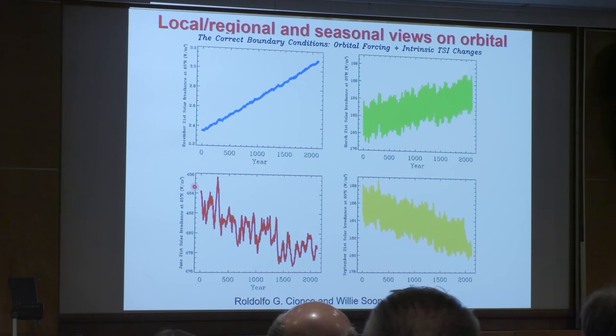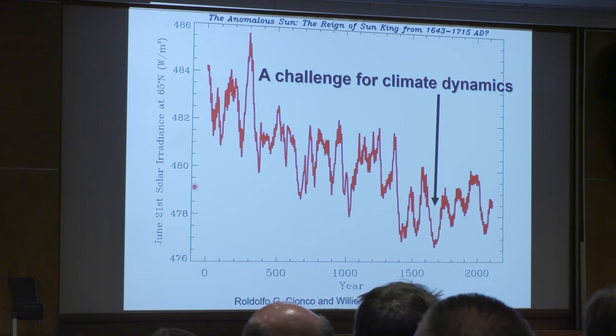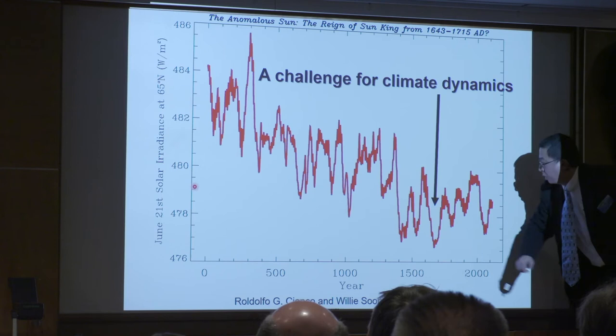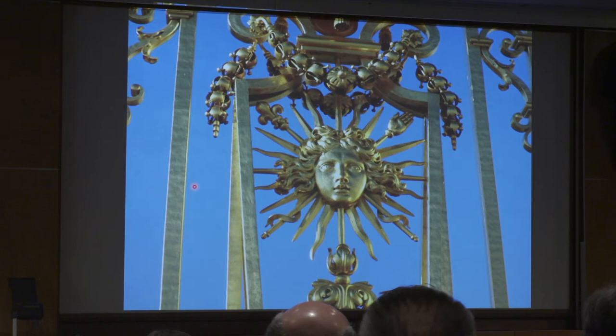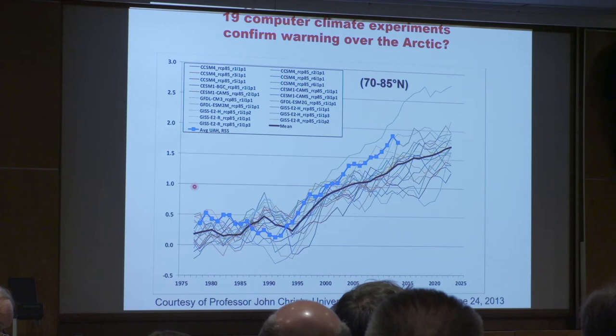One of the first things we can produce is this result, which combines what the intrinsic sun is doing plus the orbital boundary condition. Showing winter and spring, summer and fall — this is actually the first ever result consistently including the best estimate of how irradiance is changing intrinsically plus the orbital effects. And lo and behold, this result came up by itself: you have indeed the modern minimum period. It is one of the lowest summer insolation forcings at this high latitude region ever.